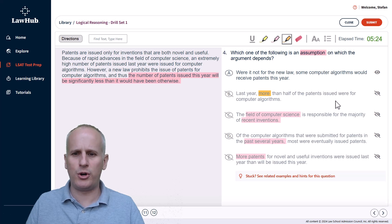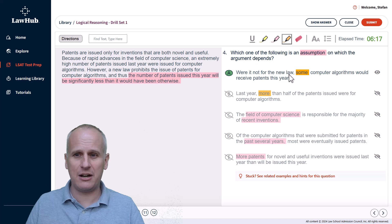But if we look at choice A, it says were it not for the new law. Now be careful, don't negate that not. That is a descriptive not, not an action not. So you don't want to negate the qualifier or the quantifying phrase, you need to negate the main part of the choice. In this case, it says some computer algorithms would receive patents this year. So we highlight that some. And the opposite of some, because some can be any number greater than zero, the opposite of some is going to be none. So if we said were it not for the new law, no computer algorithms would receive patents this year. Well, now my argument fails, because if the computer algorithms weren't going to receive patents anyway, then the number of patents is not going to be less than it would have otherwise been because of this new law, there just wouldn't have been computer algorithm patents, period. So choice A is very much necessary in its affirmative form to believe the argument and is therefore our correct assumption on which this argument about the number of patents depends.